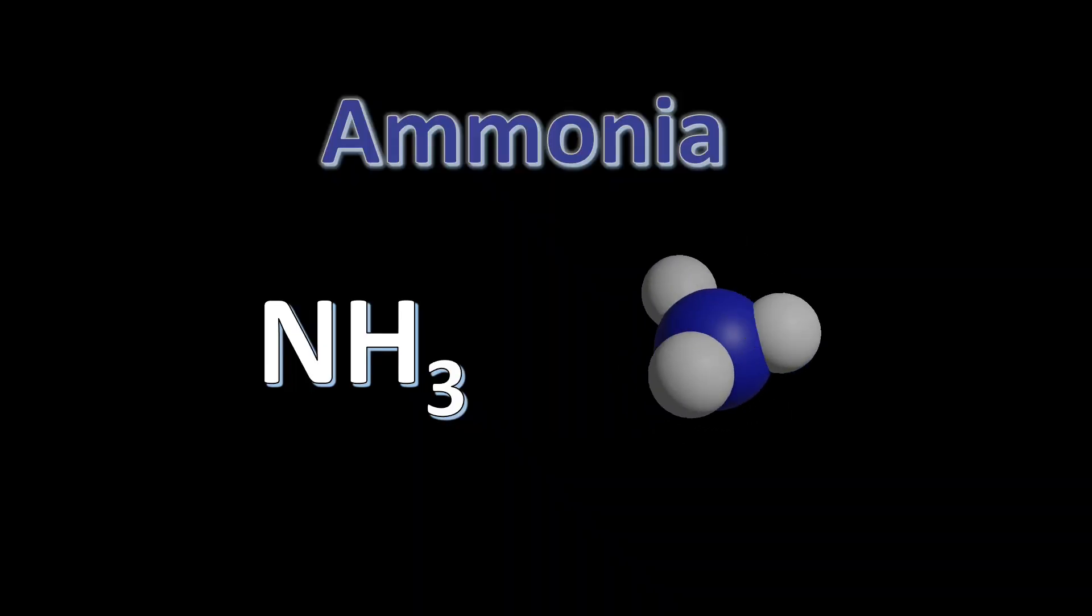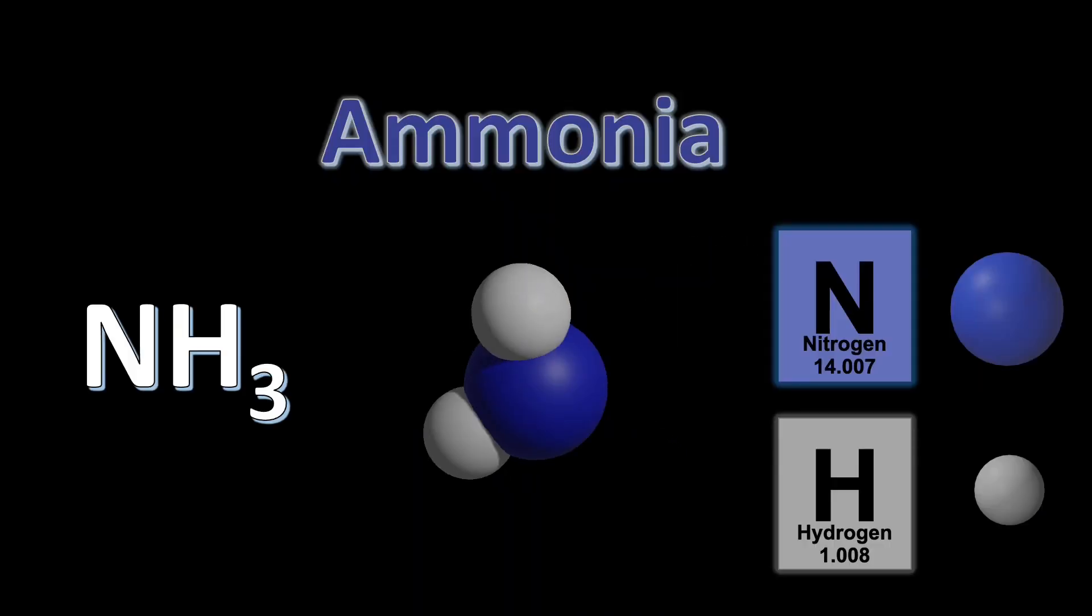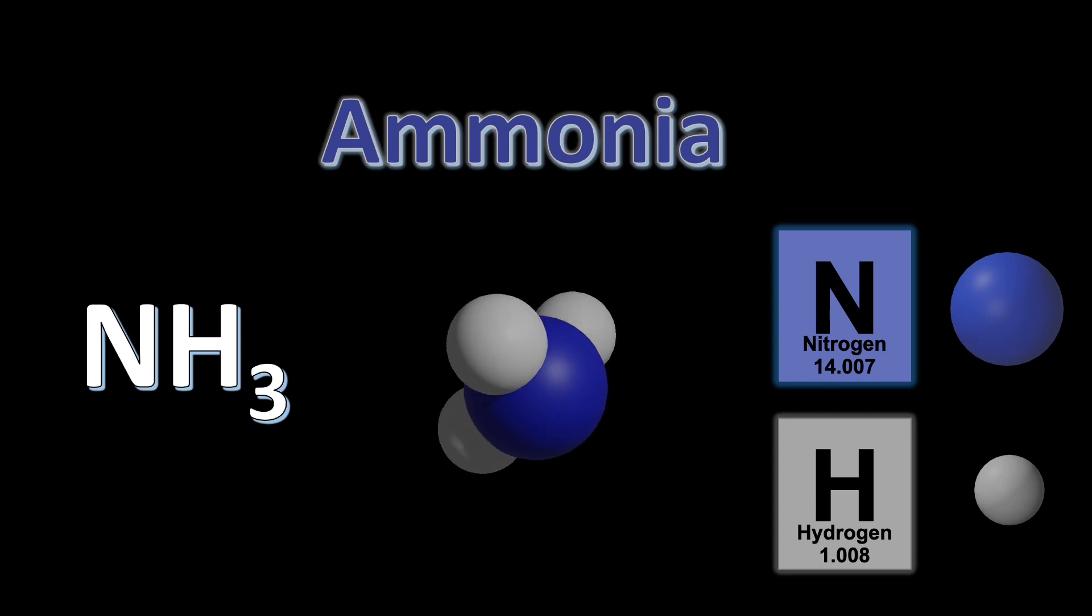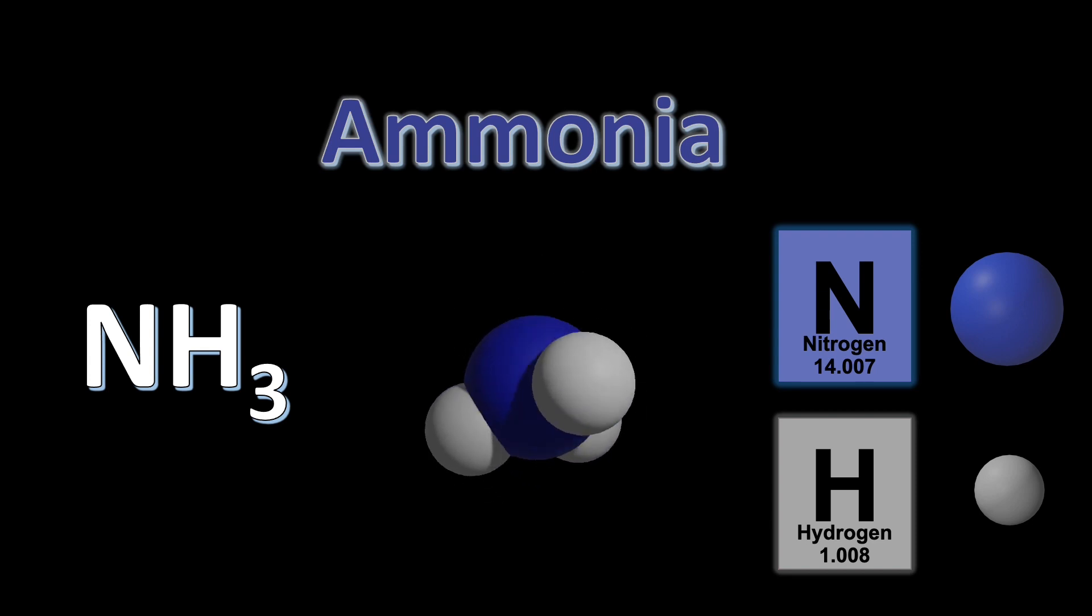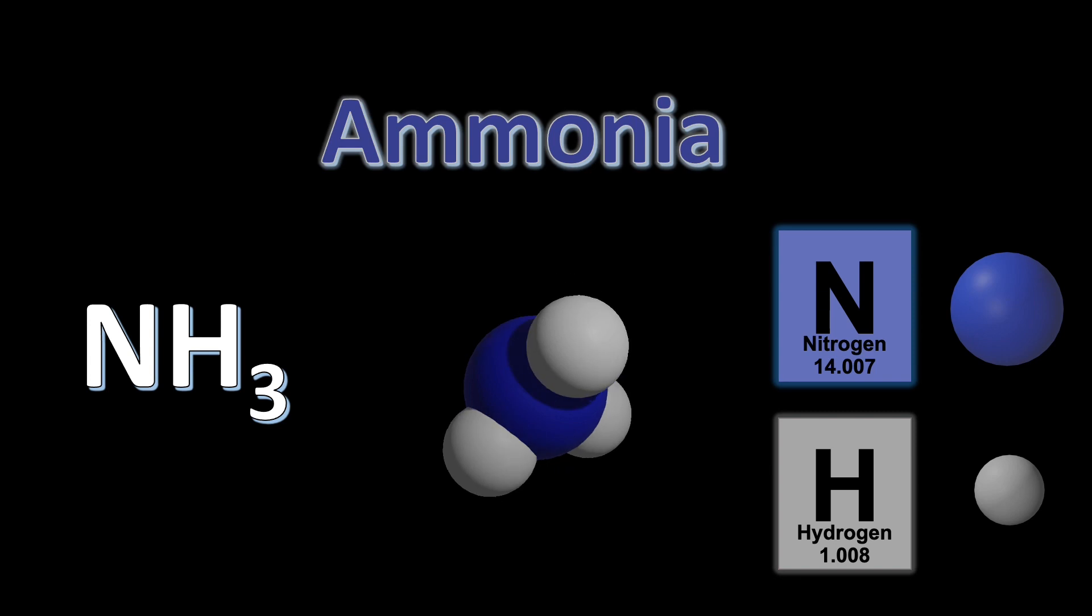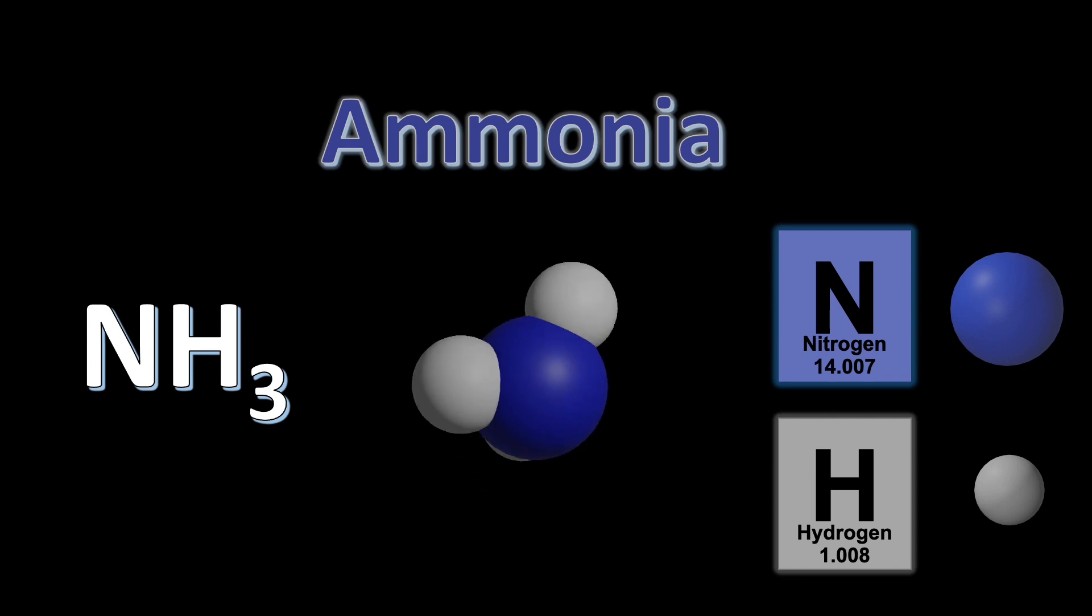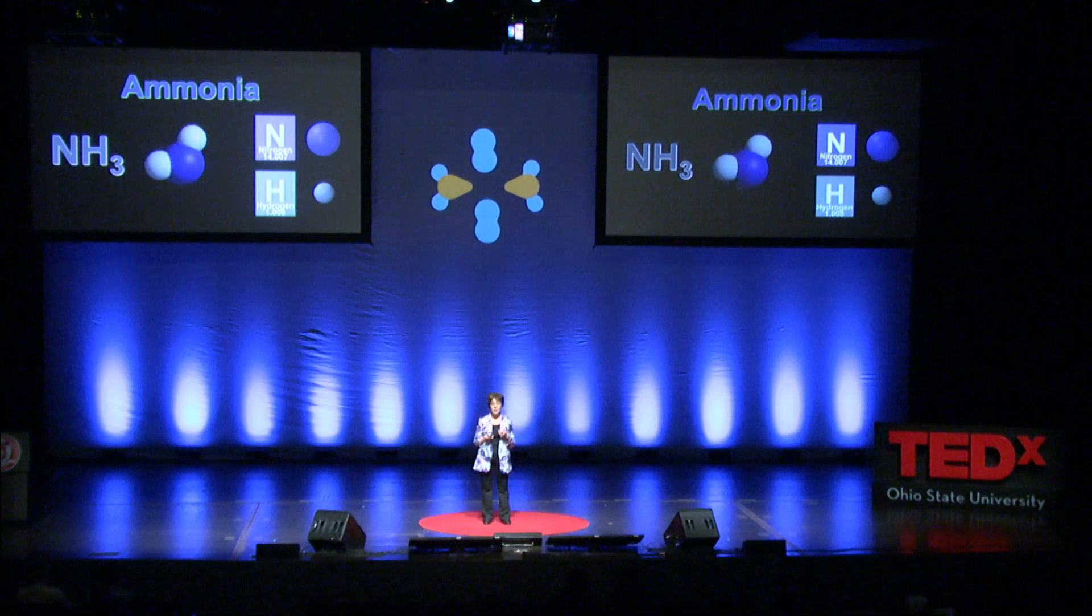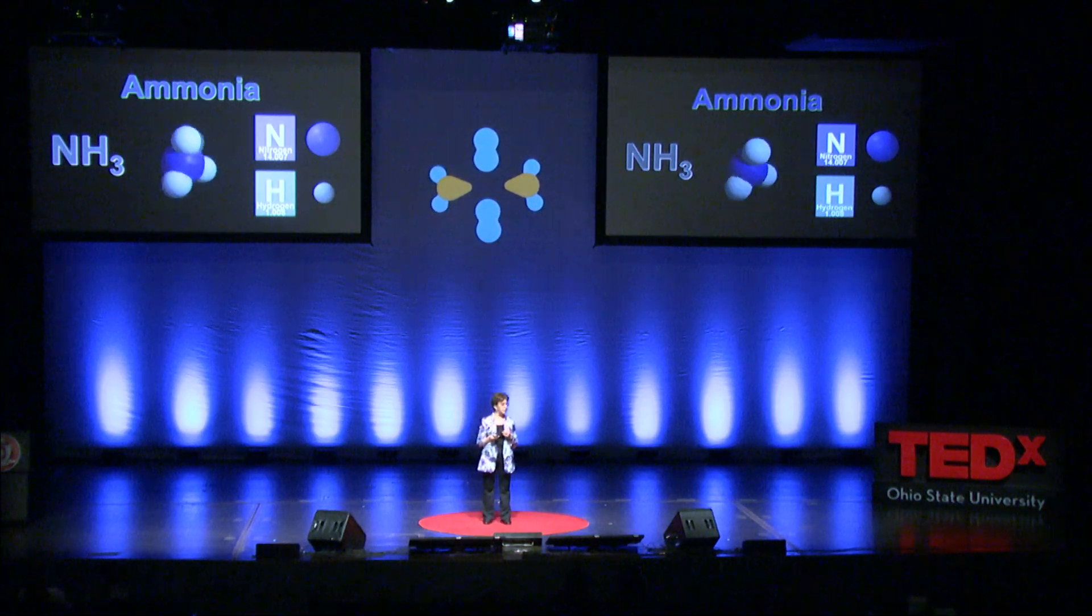This simple molecule, which is made up of three hydrogen atoms and one nitrogen atom, is actually how we make fertilizers and how we put nitrogen back in the soil to grow food. If we couldn't produce ammonia, we wouldn't be able to produce crops at the scales that we do now and half of the world population would starve.